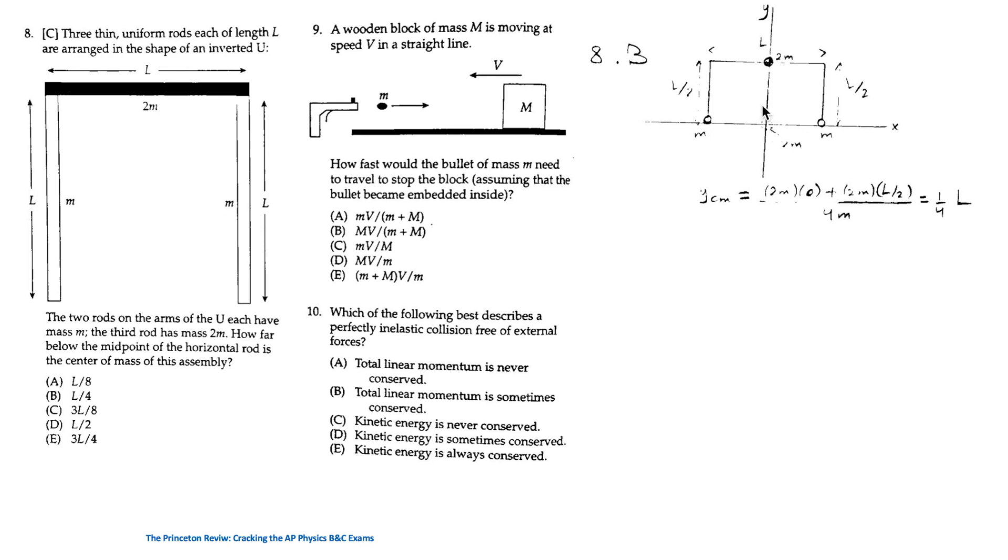We take this system, the combined system, and we find the center of mass with this rod along the y-axis. 2M times zero plus 2M times L over 2 over 4M is equal to L over 4. So the answer is B.